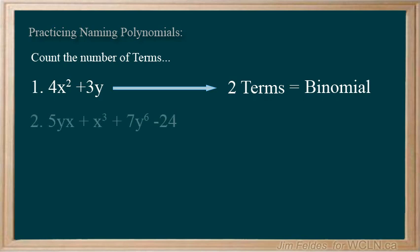The second example, you should count four terms. And since mathematicians stopped the specific naming at three, we know this is a polynomial.